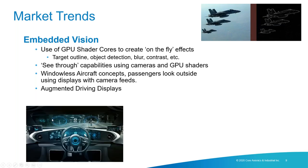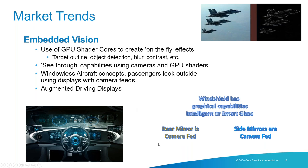In automotive, we're seeing augmented displays with rear-view mirror camera feeds, side mirrors that are camera-fed allowing night vision, and windshields with graphical capabilities such as intelligent or smart glass where data is shown on the windshield without obstructing the driver's view ahead.